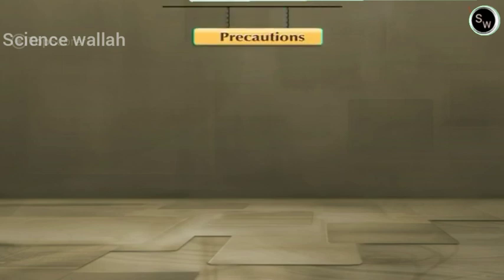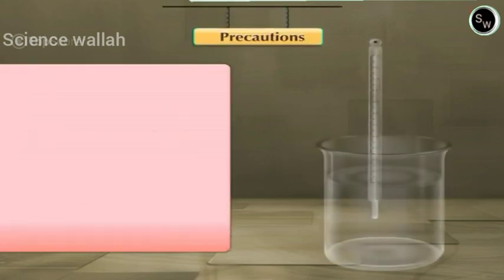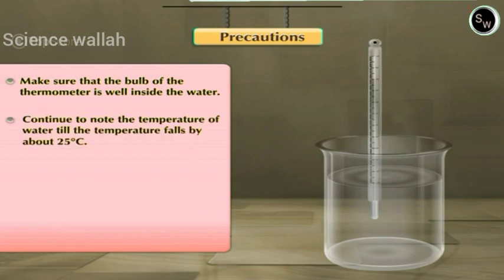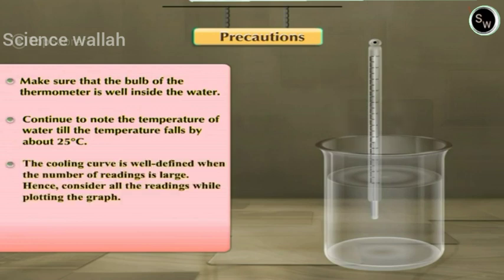Precautions taken while doing these activities are: 1) Make sure that the bulb of the thermometer is well inside the water. 2) Continue to note the temperature of water till the temperature falls by about 25 degrees Celsius. 3) The cooling curve is well defined when the number of readings is large. Hence consider all the readings while plotting the graph.